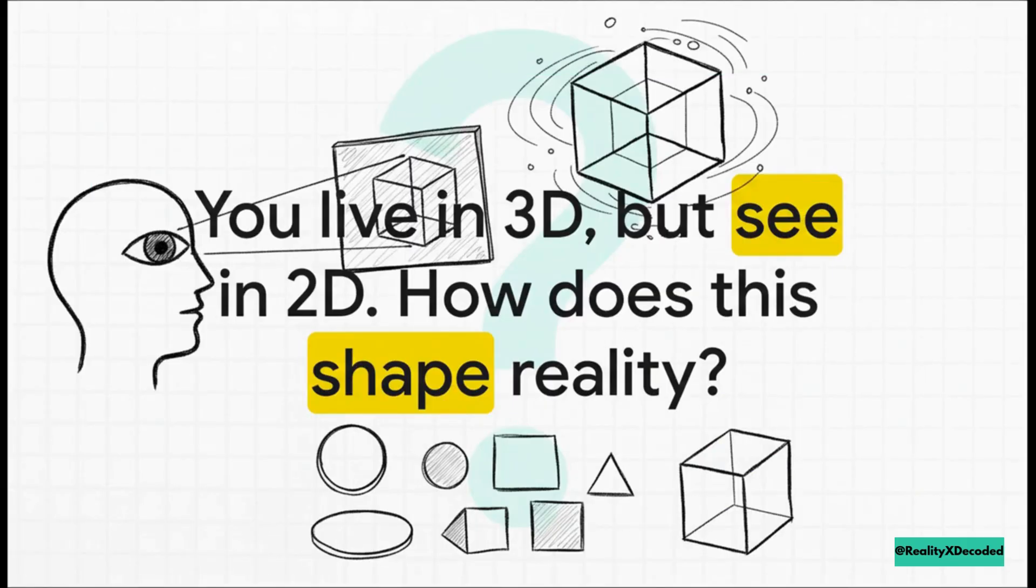But first, let me ask you something to kind of get your brain warmed up. Think about this. Everything you see right now is being projected onto the two-dimensional surface of your retinas. Your brain is just incredibly good at interpreting clues like light and shadow to build what you think is a three-dimensional model. And this little quirk of our biology? It's the key to unlocking this whole thing.